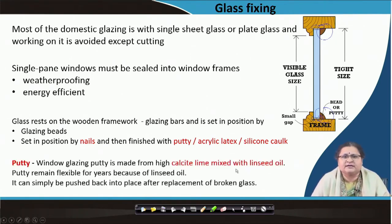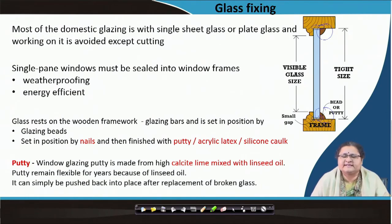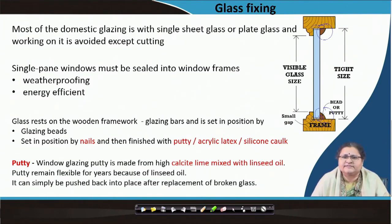What is putty? It is nothing but calcite lime mixed with linseed oil. This linseed oil gradually and very slowly evaporates, and the putty remains in position — it is a sticky kind of item and can stay together for a few years. But remember, you have already fixed the glass with nails, so even if a portion of putty comes out the glass remains in position. The putty can be taken out and resealed, and there is very little chance of the glass being broken unless it is facing any kind of impact load.